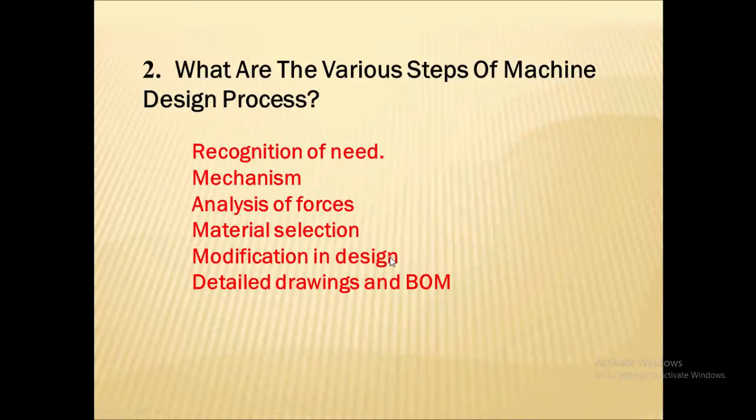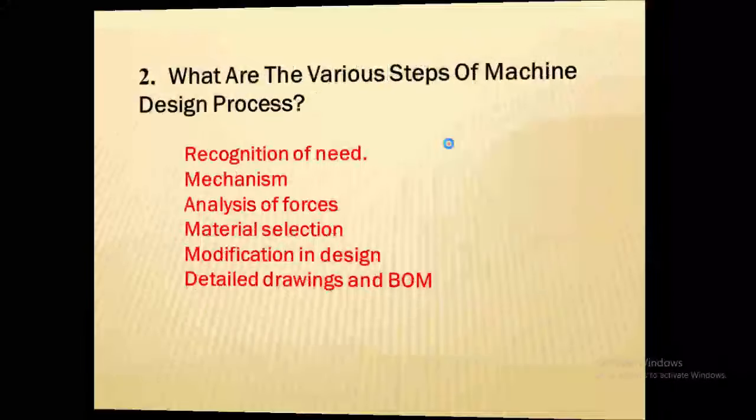Then next one is the modification in design. If possible we have to do small changes in design in order to save the product cost and time. Next one is the detailed drawings and bill of material. After that we will prepare the detailed drawings, that is the 2D drawings and bill of material to produce that product.